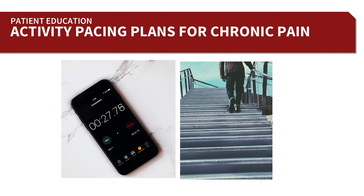One key tool for activity pacing is time-based pacing — using time instead of pain as the guide. The person who pushes until their pain is high ends up flared for days, and the total time lost for an activity like gardening for a few hours might be two full days of recovery. Instead, using a timer — say 10 or 15 minutes of activity, 30 minutes before they get symptoms — means they don't have that crash. Using time as a guide is very helpful, and you can query your patients on how they're currently doing their activities.